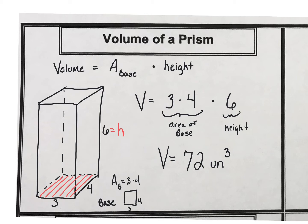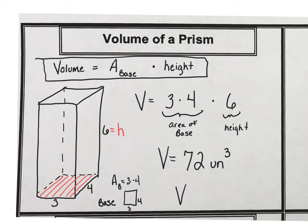What really ended up happening here — this is the formula for any prism. If we're wanting a more specific formula for a rectangular prism, the formula ends up being length times width times height. The length times the width is the area of the base and the height gives the height to the prism. This is the shortcut formula for a rectangular prism only. This is the formula for any prism for the volume.